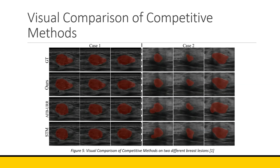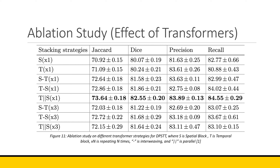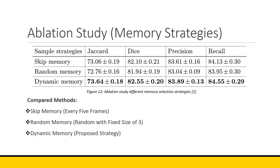The first ablation study examined the effect of transformer configurations — using just spatial, just temporal, intertwined, or parallel transformers. Using one of each in parallel yielded the best results. The authors note that with different datasets, you might want to vary the order or count of transformers. The second ablation study compared different memory strategies: skip memory, random memory, and dynamic memory. Dynamic memory performed the best, which makes intuitive sense — using only the most similar past frames helps predict the mask better than random selection or skipping through different sets.